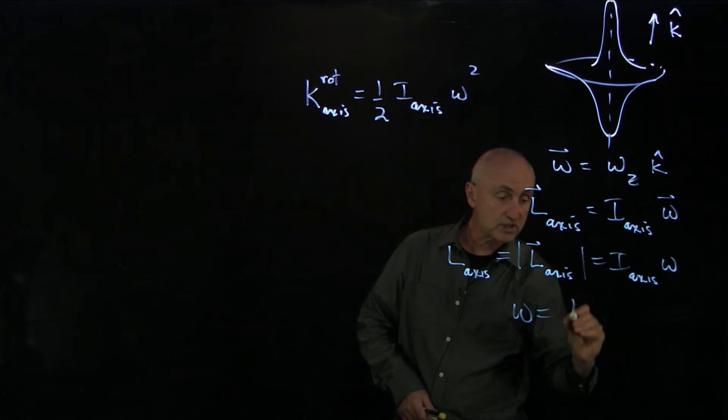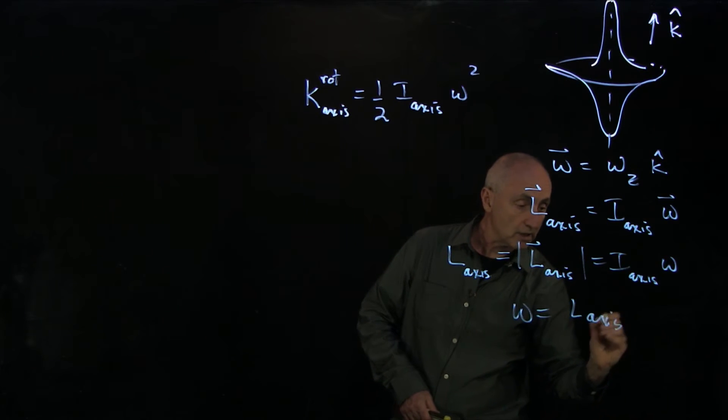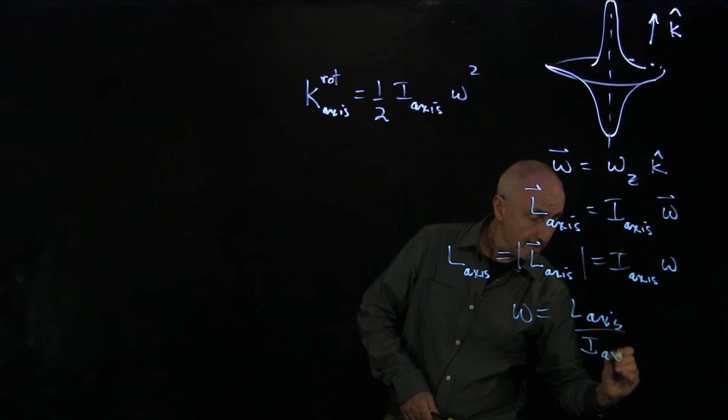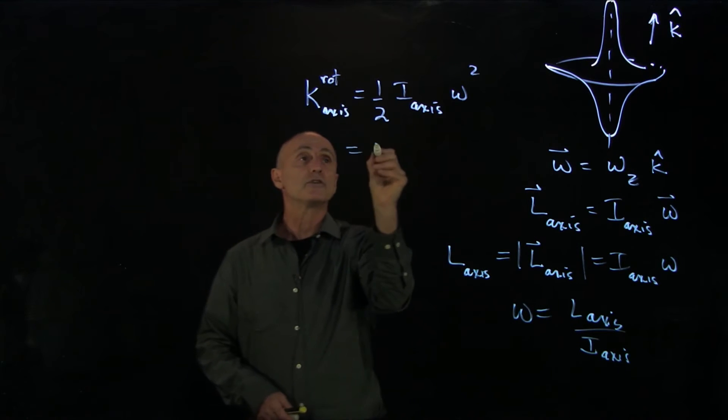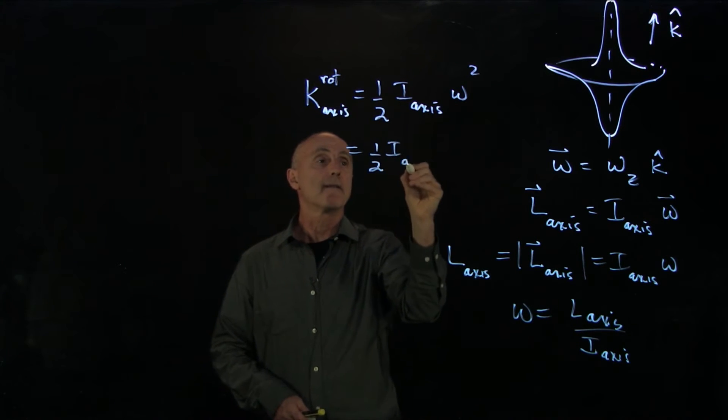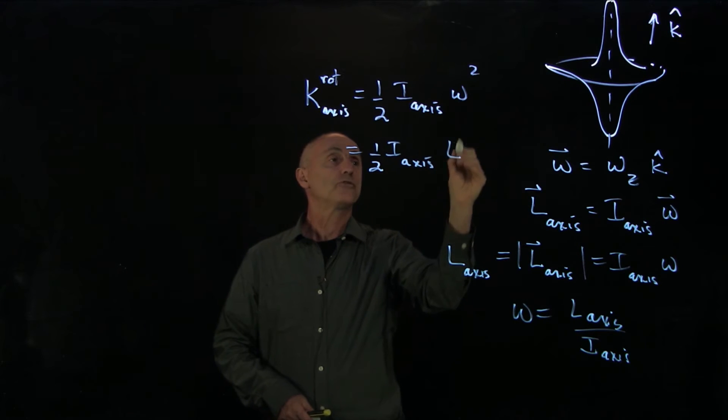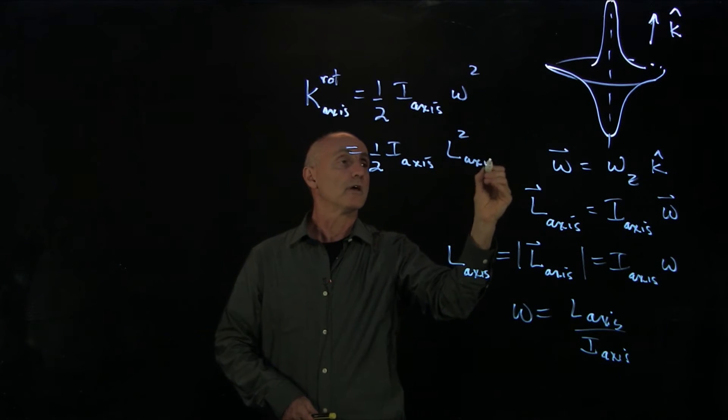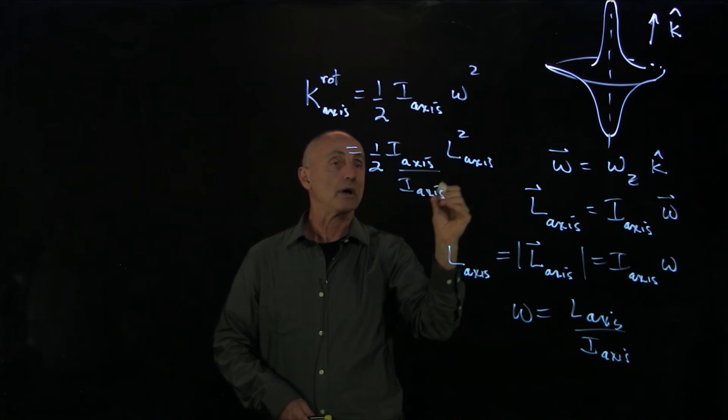But here, we see that omega squared is equal to L over I. So if we substitute that in, we get L squared about that axis over I_axis squared.